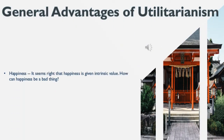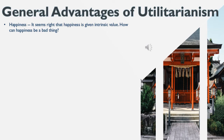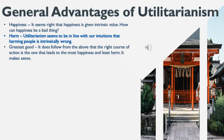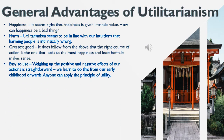Happiness — it seems right that happiness is given intrinsic value. How can happiness be a bad thing? Harm — utilitarianism seems to be in line with our intuitions that harming people is intrinsically wrong. Greatest good — it does follow from the above that the right course of action is the one that leads to the most happiness and least harm. It makes sense. Easy to use — weighing up the positive and negative effects of our actions is straightforward; we learn to do this from our early childhood onwards. Anyone can apply the principle of utility.